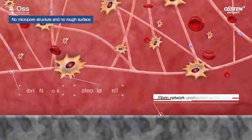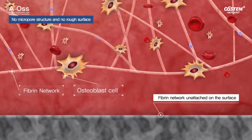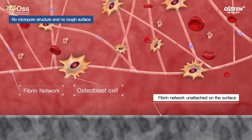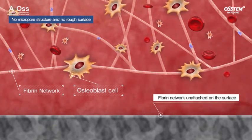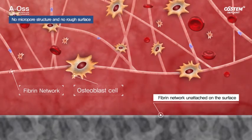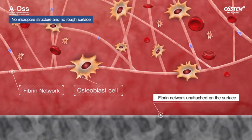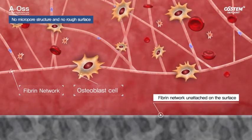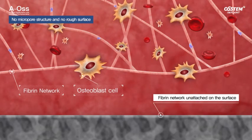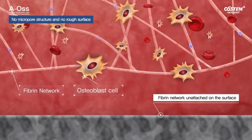On the surface without a microporous structure, the fiber network is not attached to the surface, which is a difficult environment for osteoblast cells to proliferate.